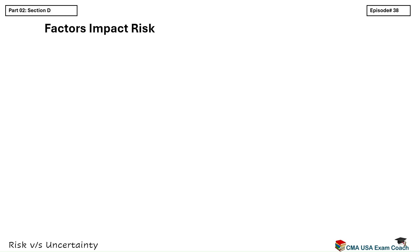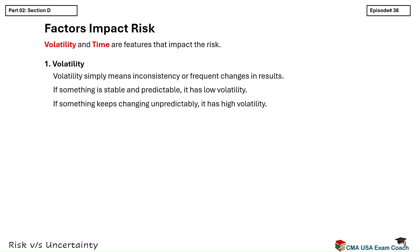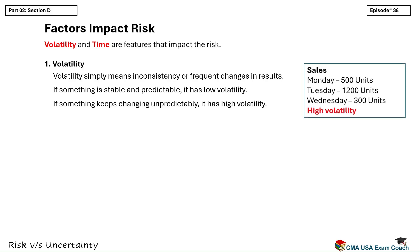There are two very important features we need to talk about: volatility and time. Volatility simply means inconsistency or frequent changes in results. If something is stable and predictable, it has low volatility. If something keeps changing unpredictably, it has high volatility. For example, imagine a company that makes daily sales — 500 units on Monday, then 1,200 units on Tuesday, then drops to 300 on Wednesday. The sales numbers are going up and down wildly — this is called high volatility. High volatility increases risk, because when outcomes are unstable, it becomes difficult for management to plan and make decisions. Volatility adds uncertainty about the future and increases the chances of bad results. The more volatile the situation, the higher the risk.